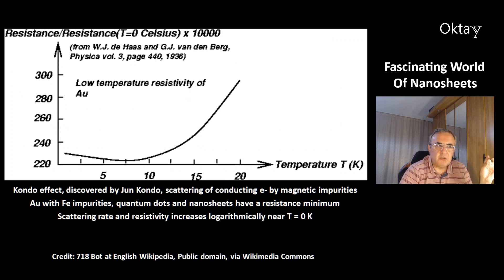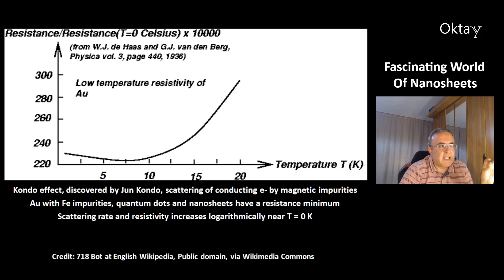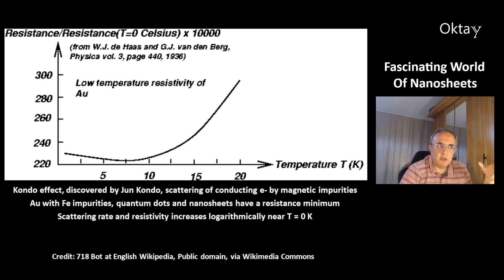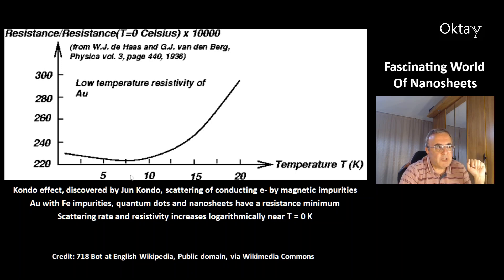This is a picture of the Kondo effect — you can see resistance vs. temperature, with a minimum at about 7K for gold. This effect was discovered by Jun Kondo and describes the scattering of conducting electrons by magnetic impurities — in this case, iron impurities in gold. This effect occurs in quantum dots and nanosheets, giving these materials a resistance minimum. The scattering rate and resistivity increase logarithmically near absolute zero, 0K.